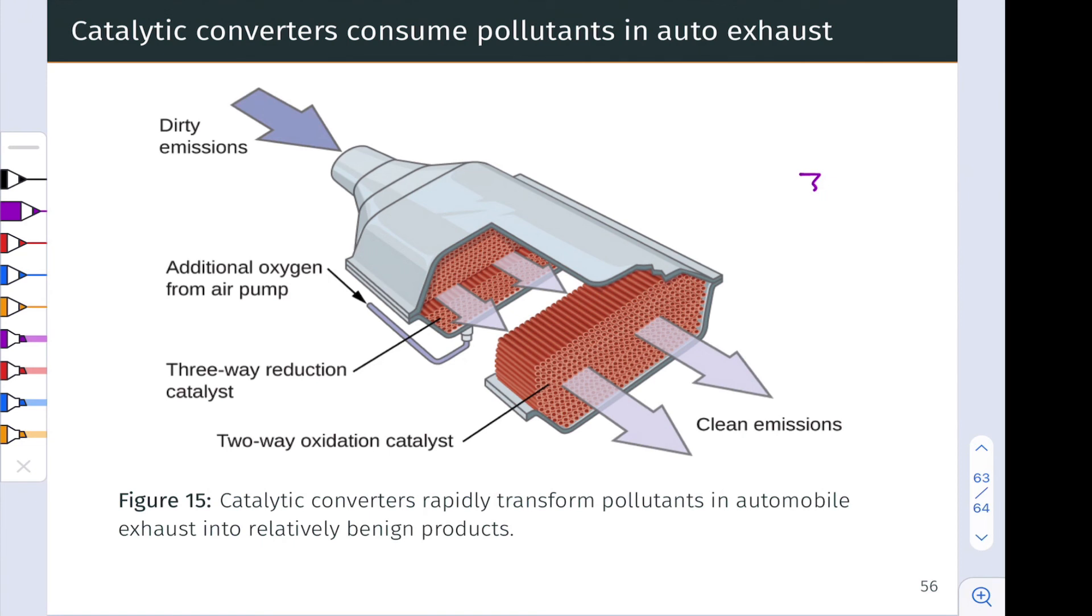Another great example of heterogeneous catalysis is catalytic converters, which have a very large surface area of solid catalyst that converts gases into other gases, essentially. Dirty emission gases enter the catalytic converter. Reactions occur involving oxygenation. So oxygen is provided from the air pump. There is a reduction catalyst of the emissions and the oxygen, as well as an oxidation catalyst. And out the other side come clean emissions. Catalytic converters are keen for ensuring that our cars don't pollute the air too much.